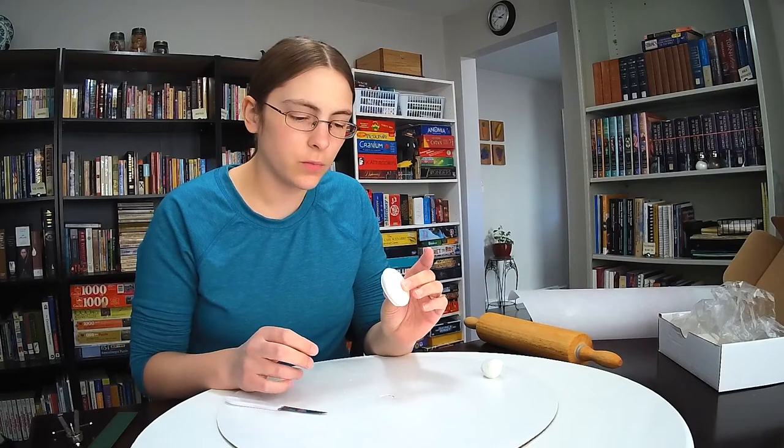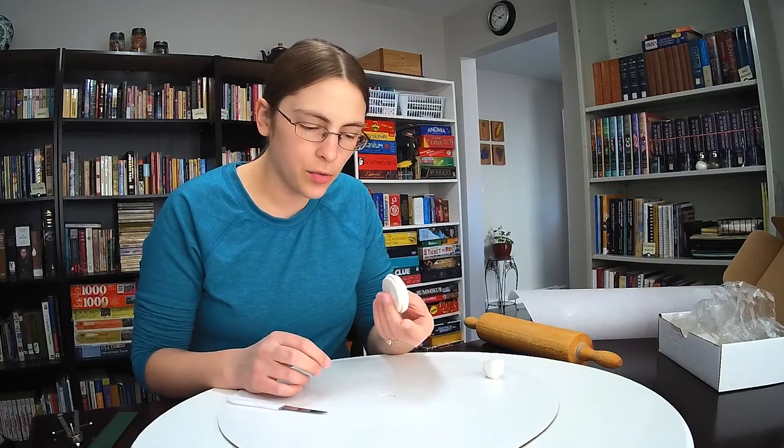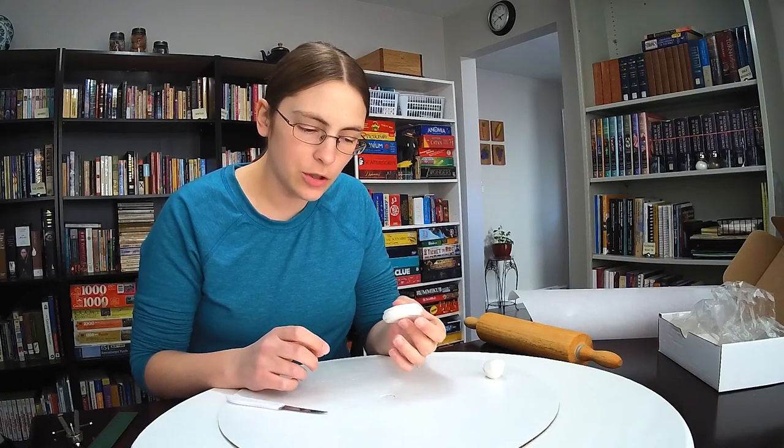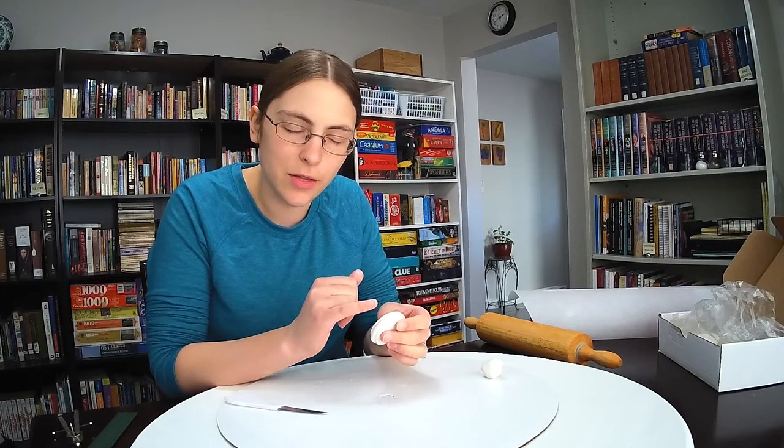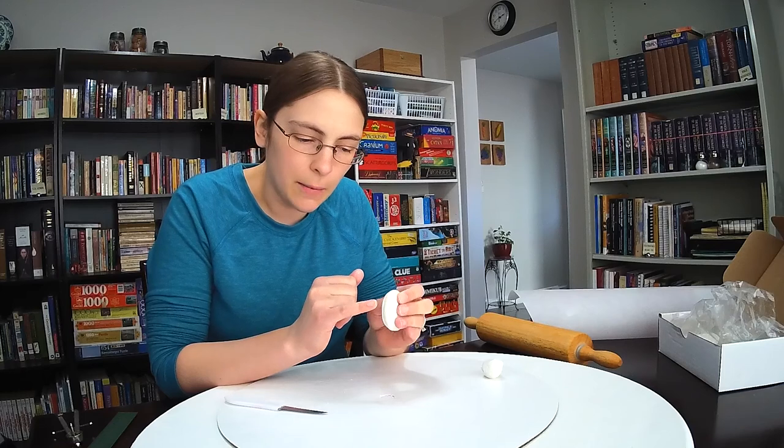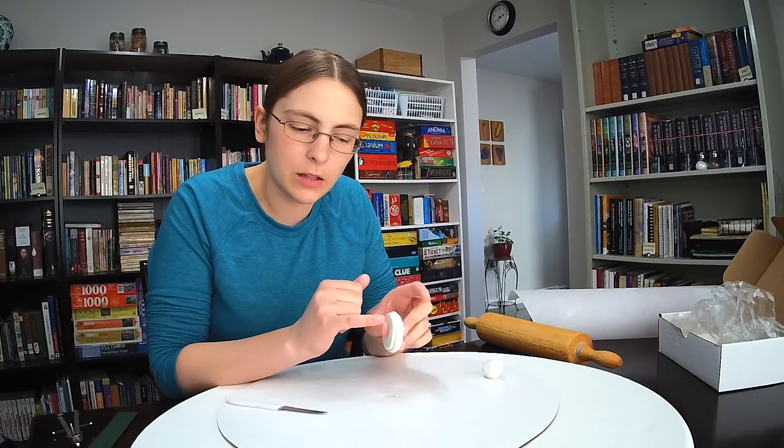Since it still looks pretty distinctly like three layers, the last thing I'm going to try to do in the smoothing process is try to erase the middle layer there. So I'm just going to have to be really careful and just make it basically try to look like there's no line in between the layers.